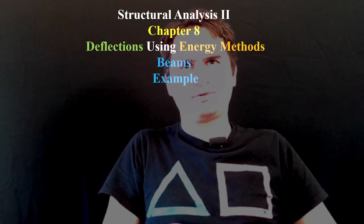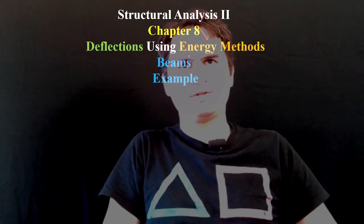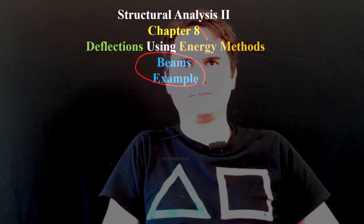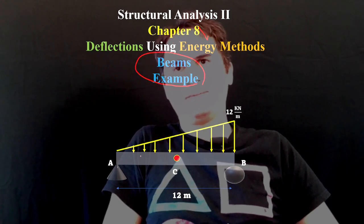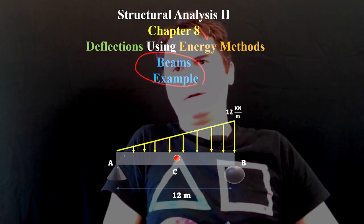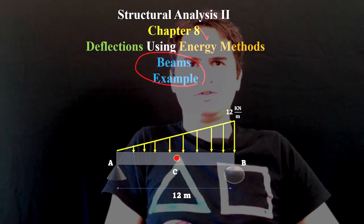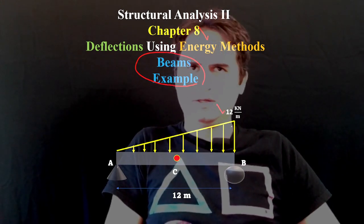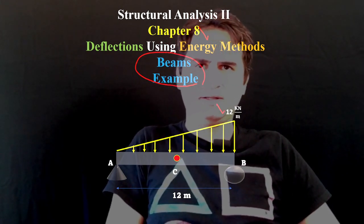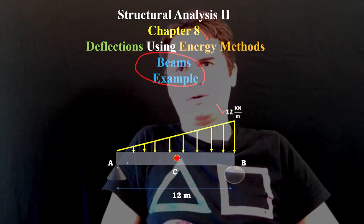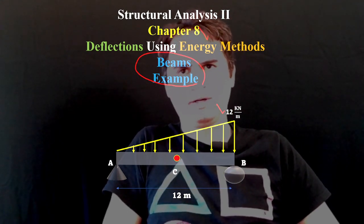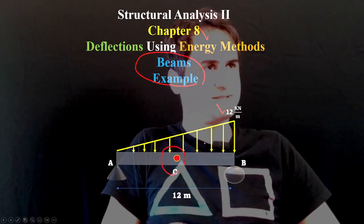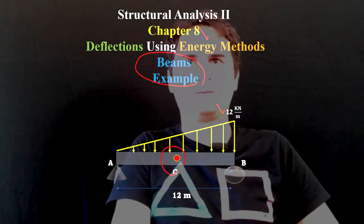Structural Analysis 2, Chapter 8: Deflections Using Energy Methods - another example in beams. In this example, we have a triangular distributed load with an intensity of 12 kN per meter over a simply supported beam. We want to calculate the deflection at its center. Let's see how we can solve this problem.